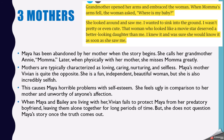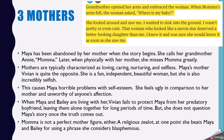When Maya and Bailey are living with their mother Vivian, she really fails to protect Maya from her predatory boyfriend. She leaves them alone for long periods of time. However, she does not seem to question Maya's story once the truth comes out about what's happening to her, so that is really to her credit. Mama is not a perfect mother figure either. She's a religious zealot in some ways — portrayed as a very loving Christian in some ways, but at one point she beats Maya and Bailey for using a phrase she considers blasphemous.